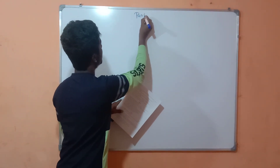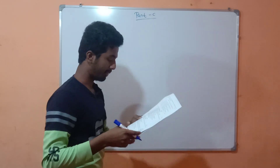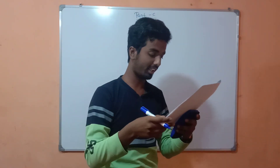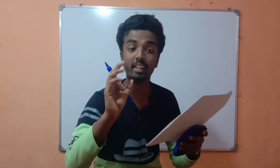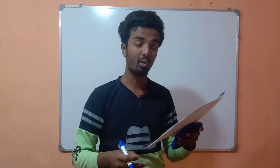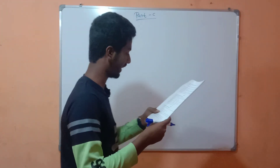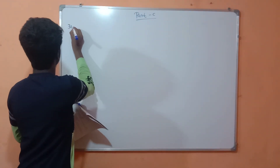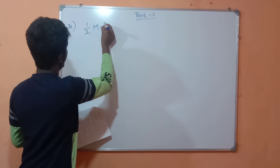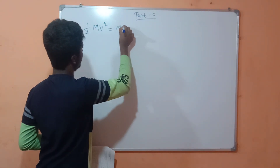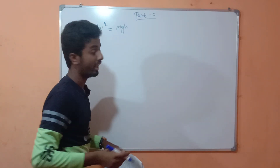The three marks questions are from Part C. Part C starts from the 30th question. Question 30 says: check the consistency of the equation half mv² = mgh using dimensional analysis. Symbols have their usual meanings. We have to check the consistency of the given equation. Let me write here: half mv² = mgh.